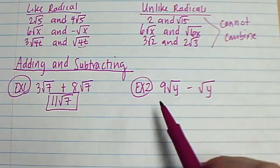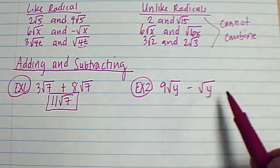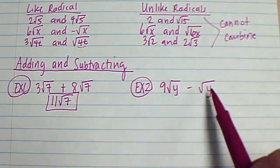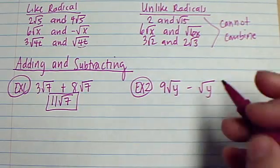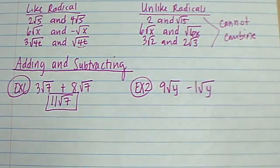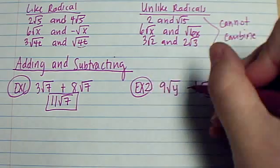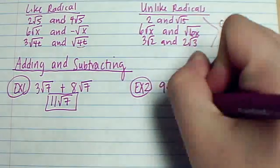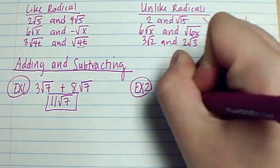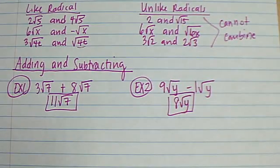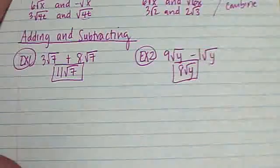Here I have 9 root y minus root y. They both have root y, so I can combine these. There's a 1 in here, so I need to do 9 minus 1 and get 8 root y. Again, underneath your square root it stays the same — nothing changes on that.